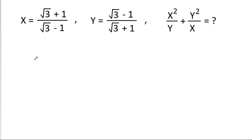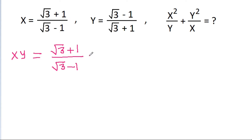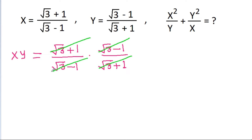If we multiply x and y, then x into y will be equal to root 3 plus 1 by root 3 minus 1 times root 3 minus 1 by root 3 plus 1. Root 3 plus 1 will get cancelled and root 3 minus 1 also gets cancelled. So we get xy is equal to 1, that means y is equal to 1 by x.